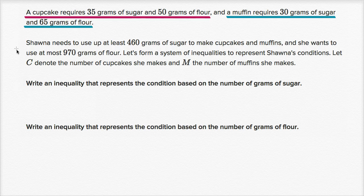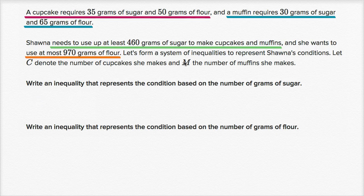Shauna needs to use up at least 460 grams of sugar to make cupcakes and muffins, and she wants to use at most 970 grams of flour. Let's form a system of inequalities to represent Shauna's conditions. Let C denote the number of cupcakes she makes and M the number of muffins she makes. Write an inequality that represents the condition based on the number of grams of sugar.